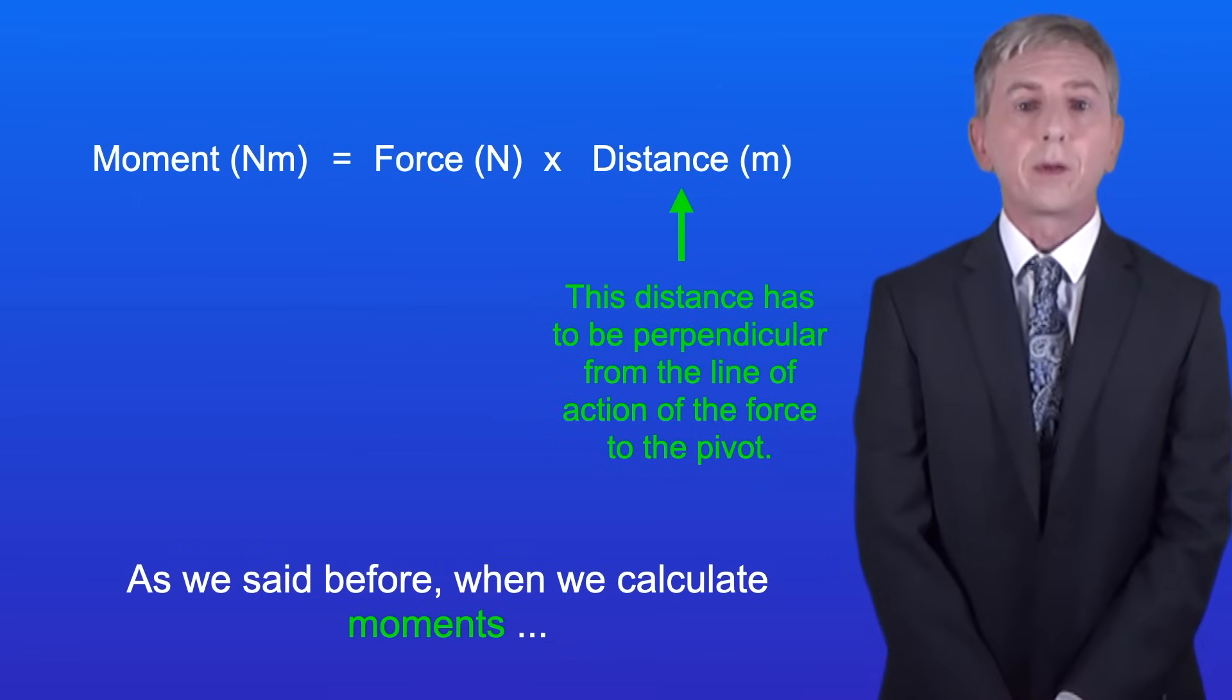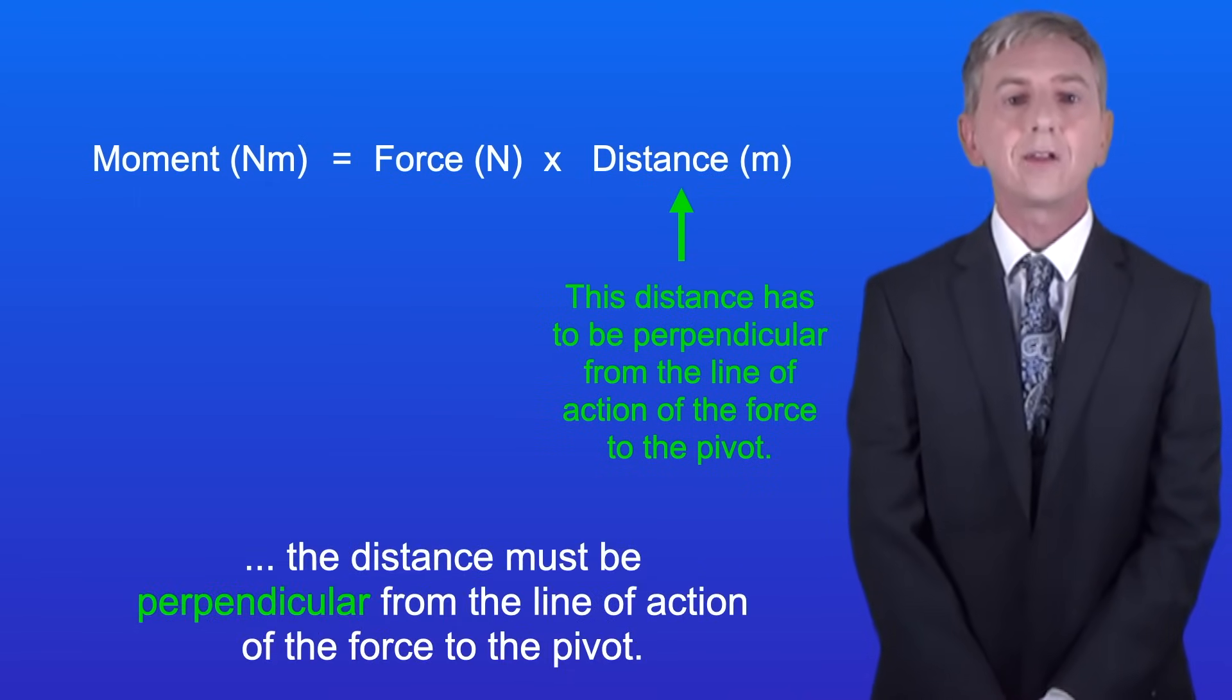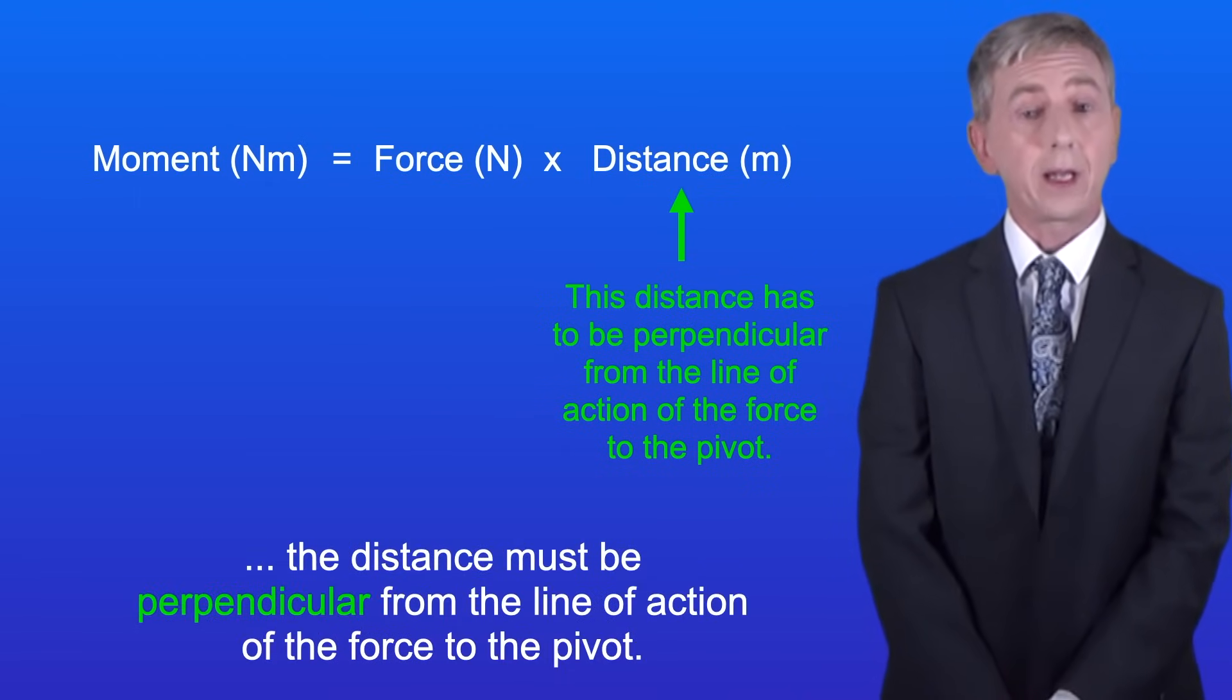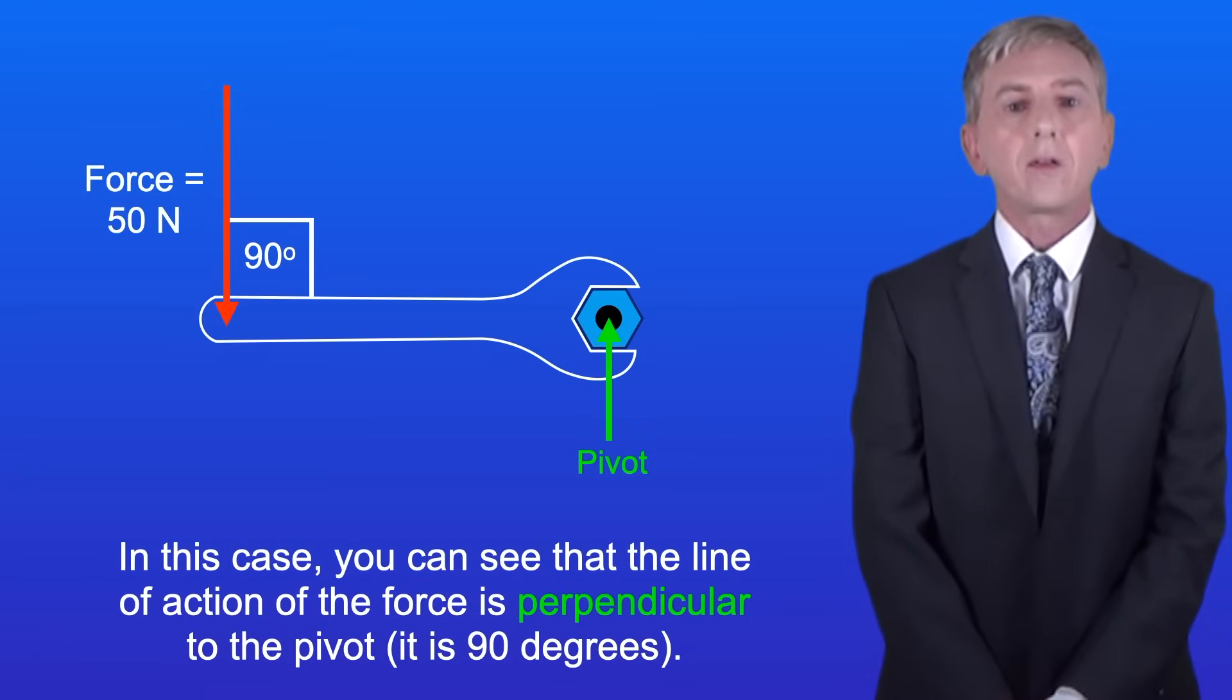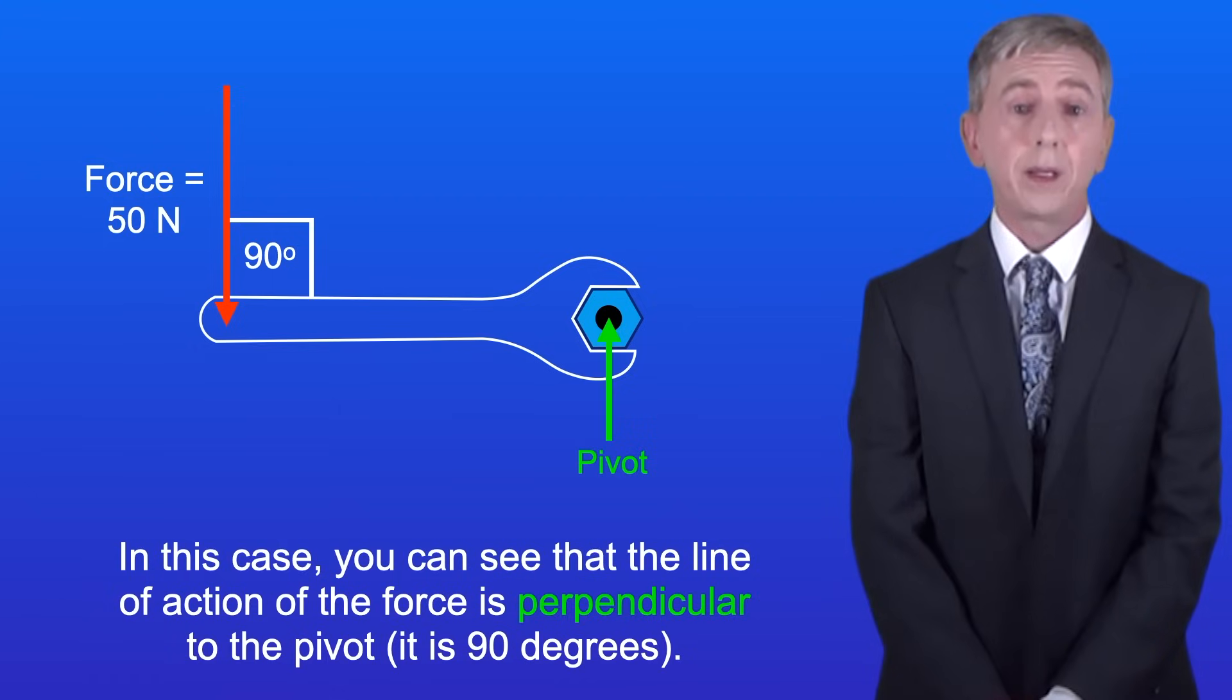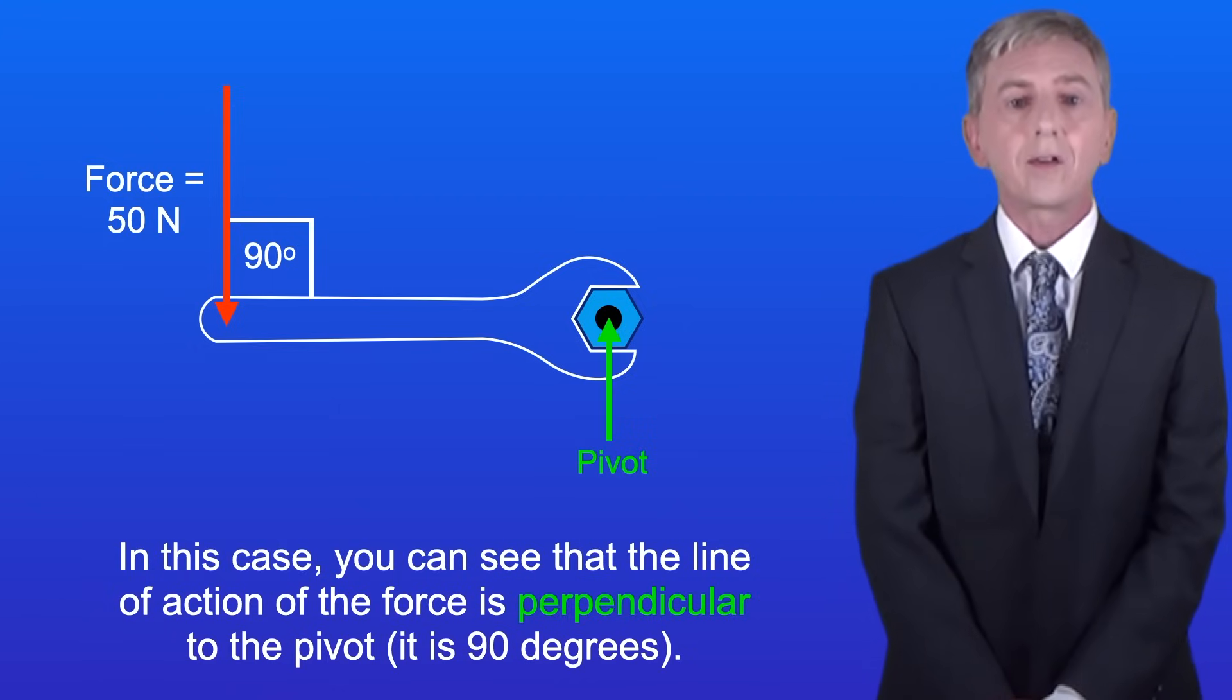Okay now as we said before, when we calculate moments the distance must be perpendicular from the line of action of the force to the pivot. In this case you can see that the line of action of the force is perpendicular to the pivot. In other words it's 90 degrees.